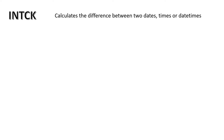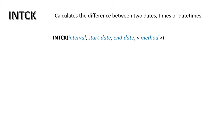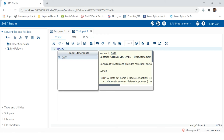So how does the syntax go? You would have to write INTCK, then start the parenthesis, then the operator, and then put the interval. What all could be the intervals, I will show you in the next slide. For now, understand that we need to provide an interval. For example, the interval could be months — how many months is the difference between two dates. Then you provide the start date, then the end date, and then the method, which is an optional parameter that I will explain as we progress.